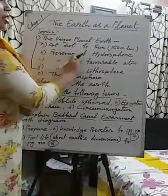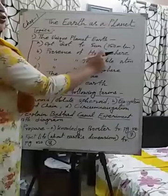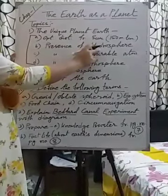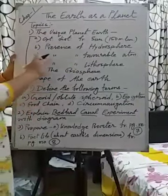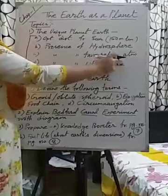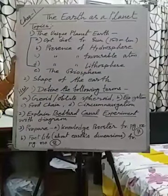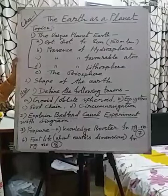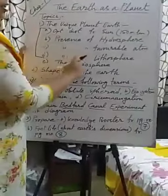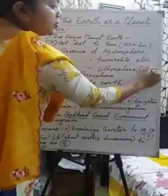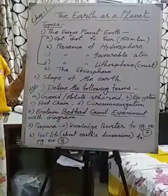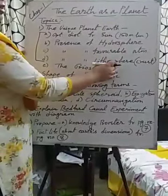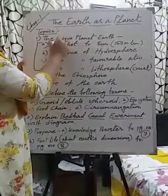The second reason is the presence of the hydrosphere — hydrosphere means the layer of water. On this planet, enough water is present in different forms, so life can exist here. The third reason is the presence of a favorable atmosphere: we have a layer of atmosphere consisting of different gases, and those gases are very important for life to exist on this planet. The fourth reason is the lithosphere, also called the crust — the solid surface of Earth where all living and non-living organisms can stay.